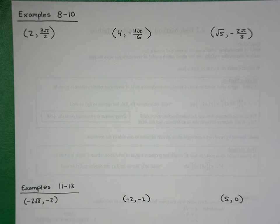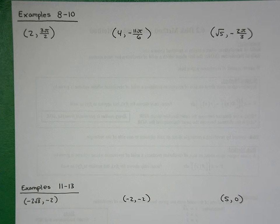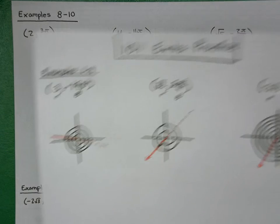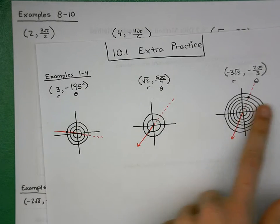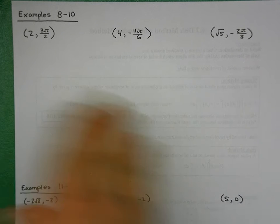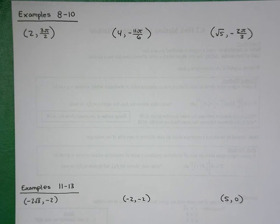This is for the second page of your objective one notes, extra practice numbers 8 through 10. We looked at plotting the coordinate point and converting to rectangular coordinates. Because there's already an extra practice video for graphing polar coordinate points covering examples 1 through 4, I'm not going to spend a lot of time on the graphing portion here — I'm going to focus primarily on the conversion.